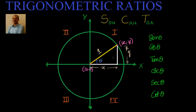Now, how do we obtain the trigonometric identities? We know that there are 6 trigonometric ratios — nothing but the mathematical tools which we can apply, with the help of which we can relate the sides of a right angle triangle.